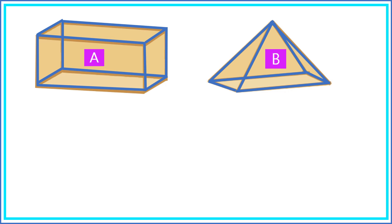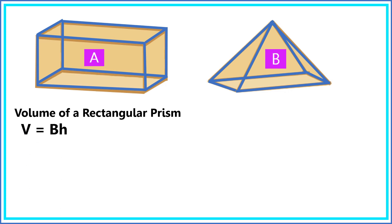Now let's solve the volume of these two solid figures to prove that the volume of a pyramid is one-third the volume of a rectangular prism. To find the volume of a rectangular prism, we use this formula: volume is equal to base times height — we get the area of the base and multiply it by the height.